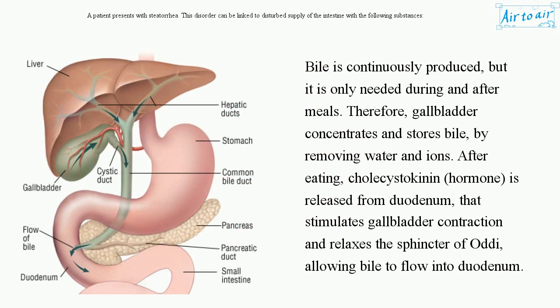Bile is continuously produced but it is only needed during and after meals. Therefore, the gallbladder concentrates and stores bile by removing water and ions. After eating, cholecystokinin, a hormone, is released from the duodenum, which stimulates gallbladder contraction and relaxes the sphincter of Oddi, allowing bile to flow into the duodenum.